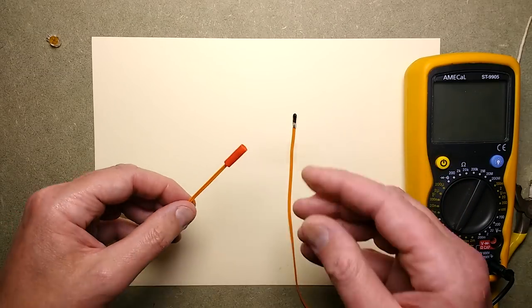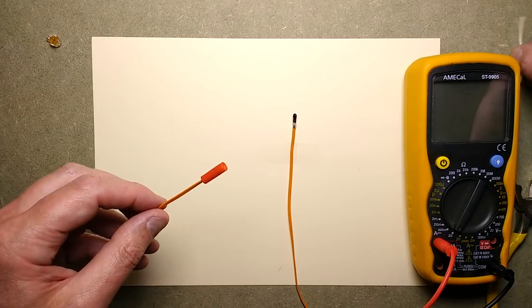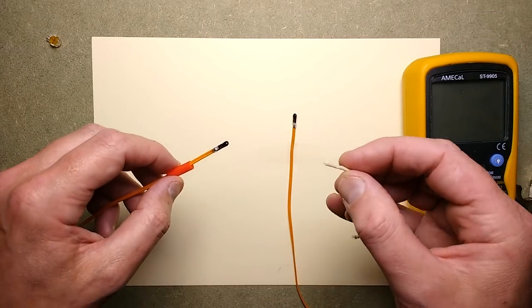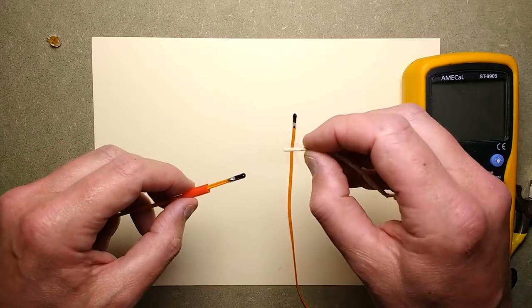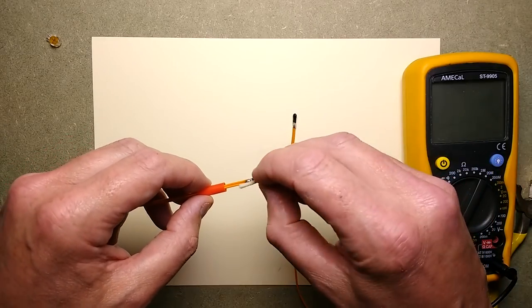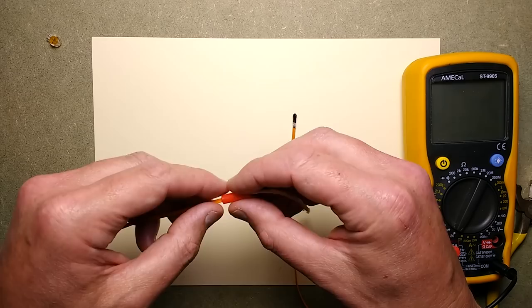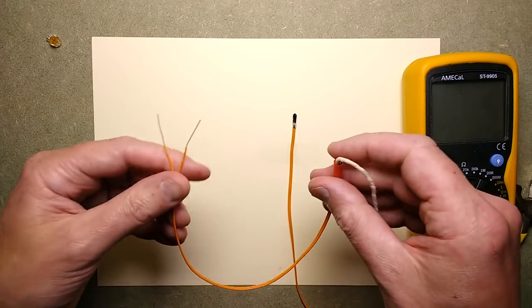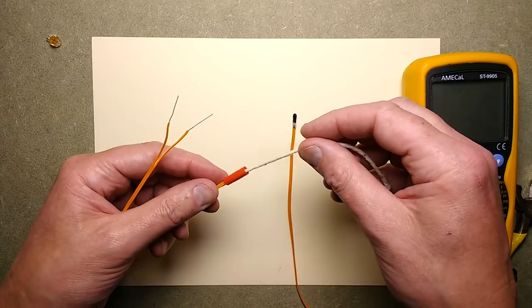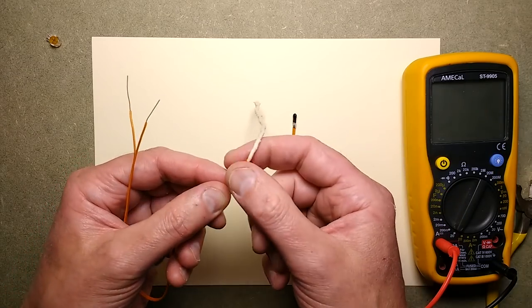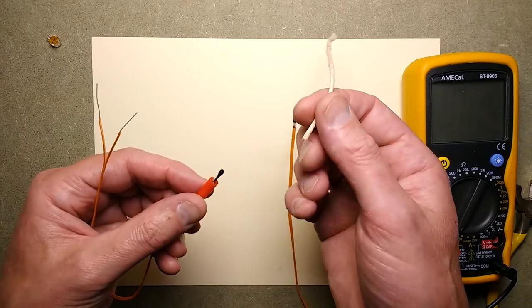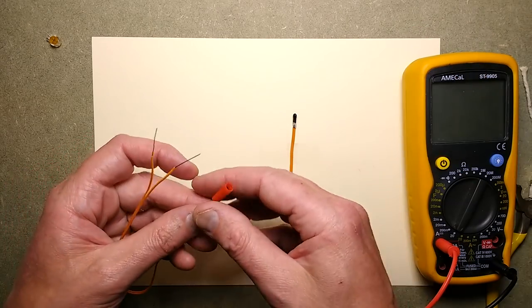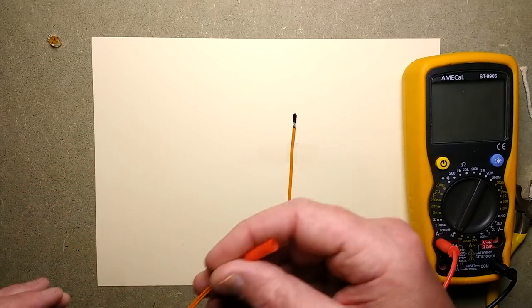So this is an electric match, it's used for lighting pyrotechnic devices. I've shown these before but I'm going to do an interesting experiment with them. The idea is that if you've got a fuse for the firework, you can slip it under this red cover, slide it up against the match that locks it in place, and then when you apply current across this it will trigger it.